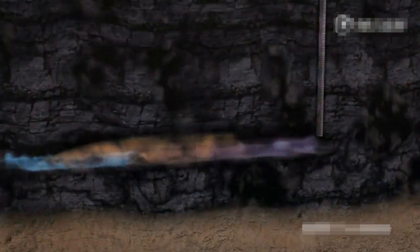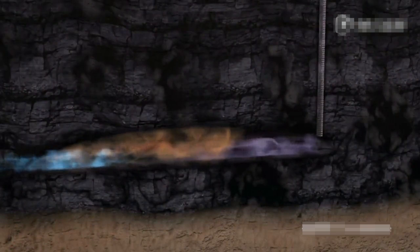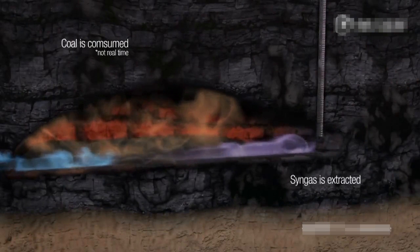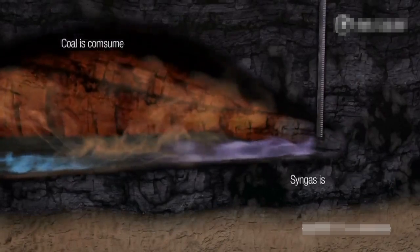The syngas, which contains a high percentage of carbon monoxide, hydrogen and methane, flows from the gasification chamber through the horizontal connection in the coal seam and up the production well.